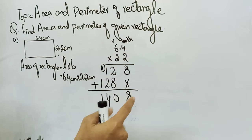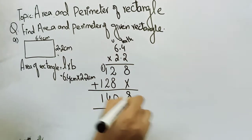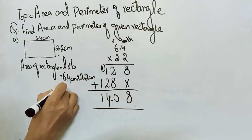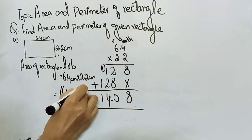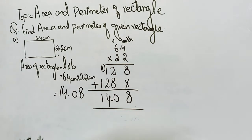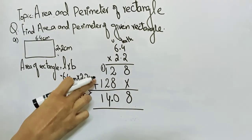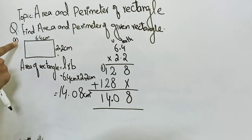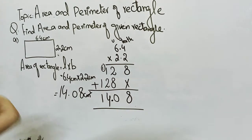Since we have just two decimal values — one and two — we put the decimal after two values from the right side. So our area of rectangle is fourteen point zero eight centimeters squared. In this way we can multiply the given values.